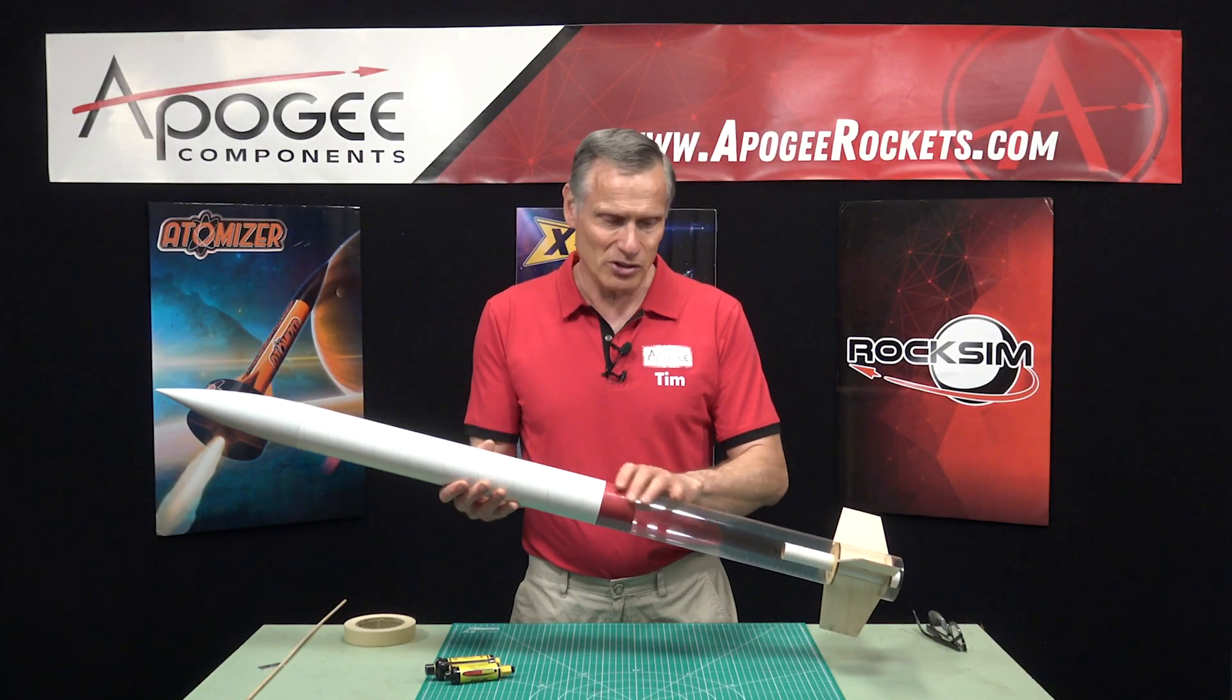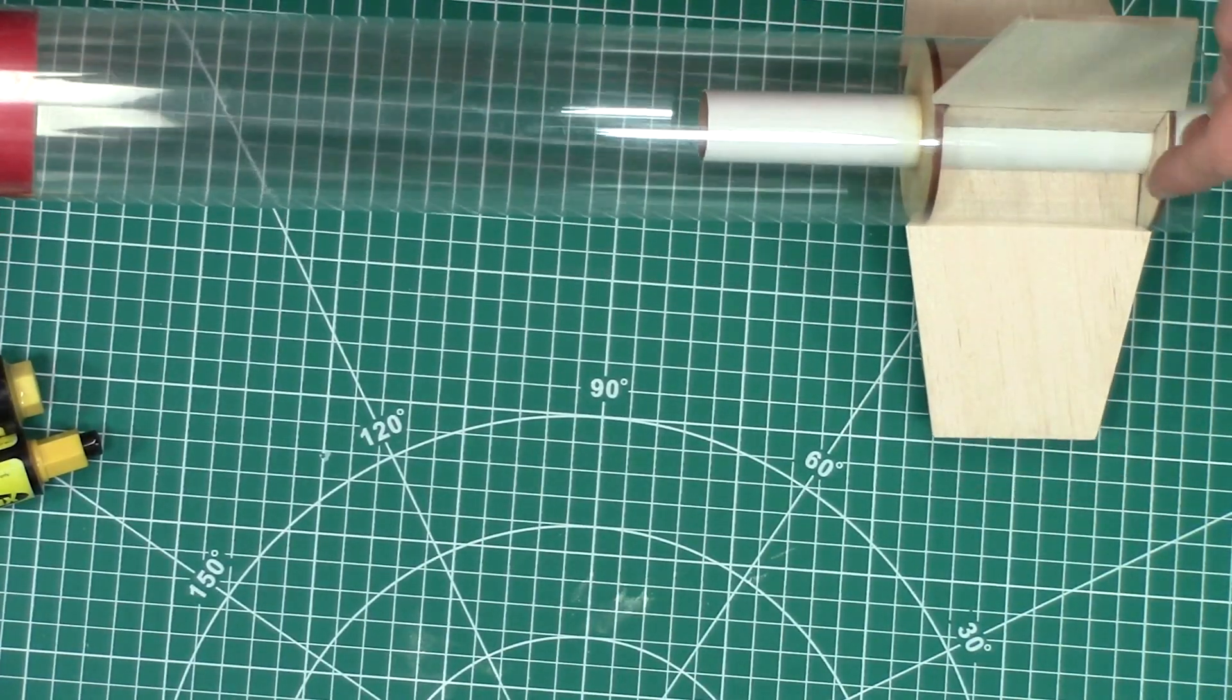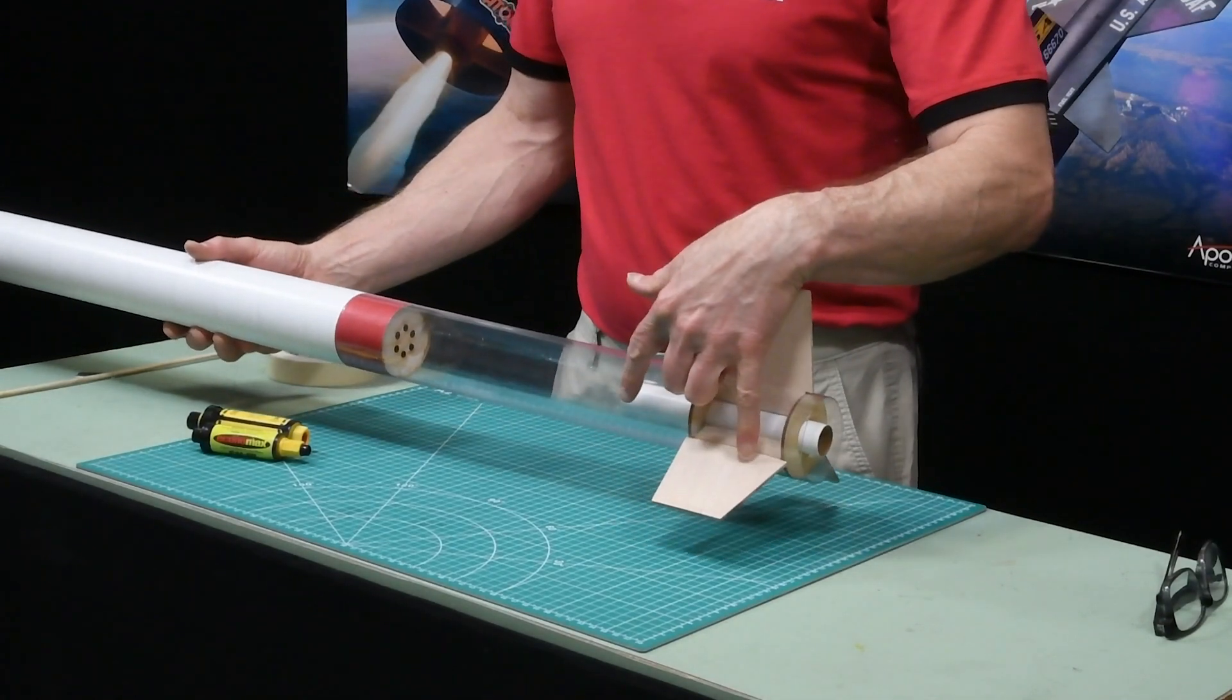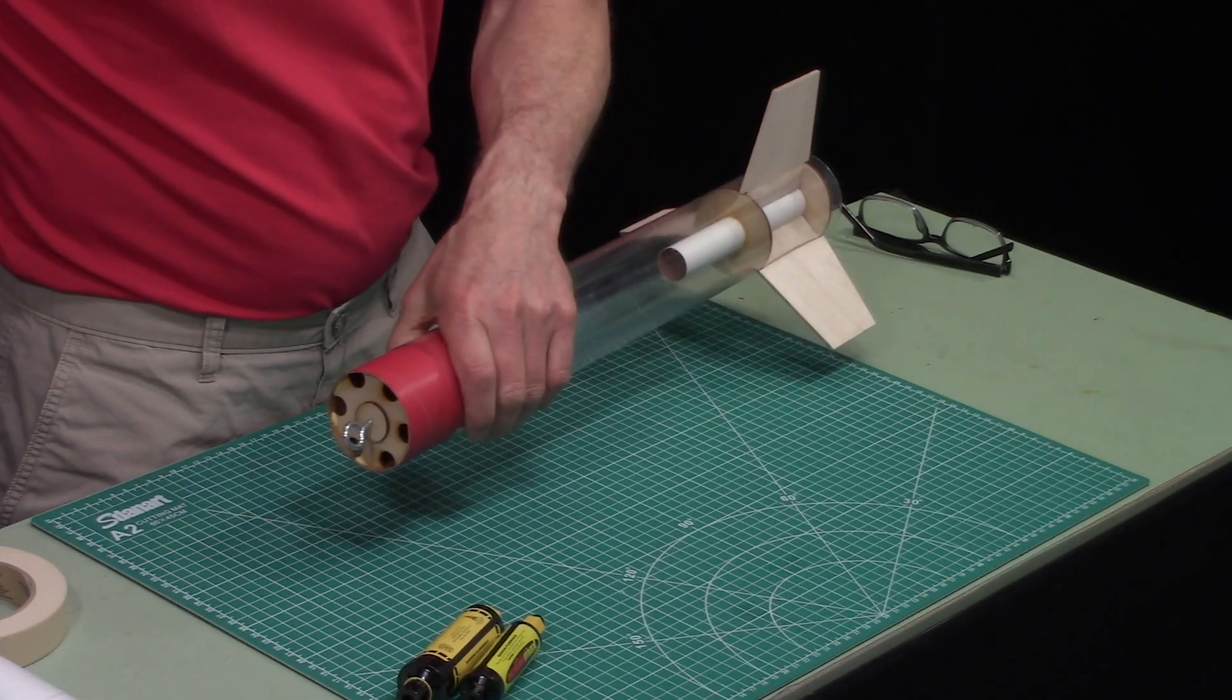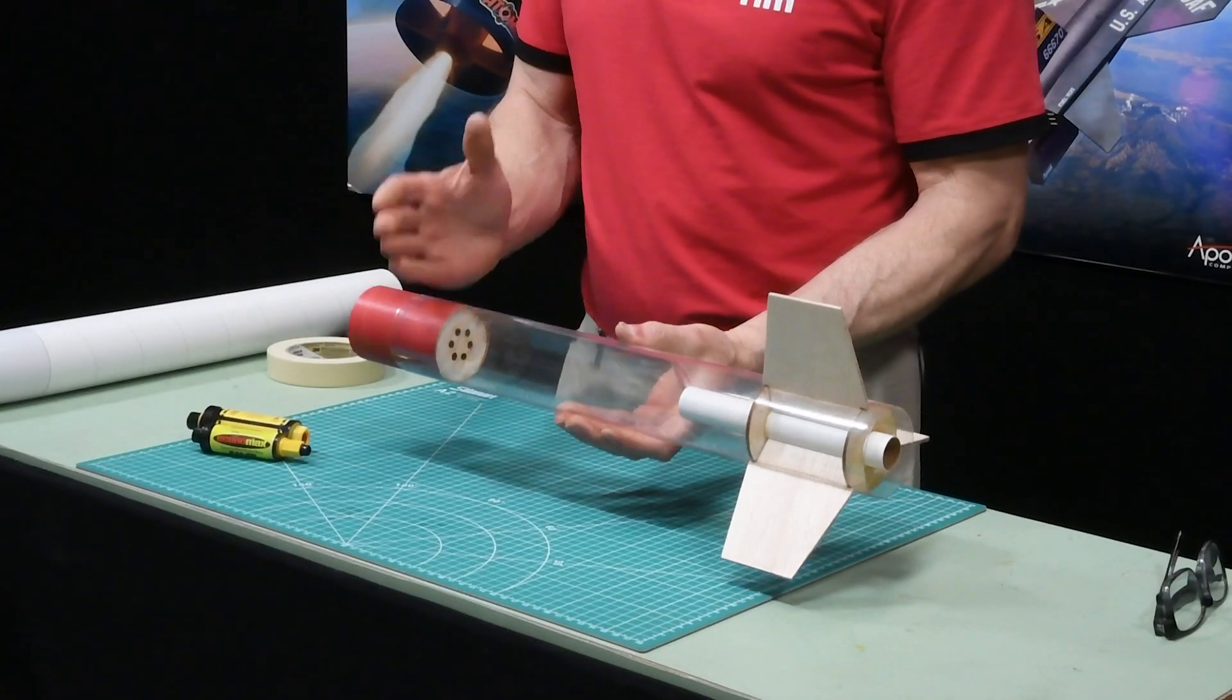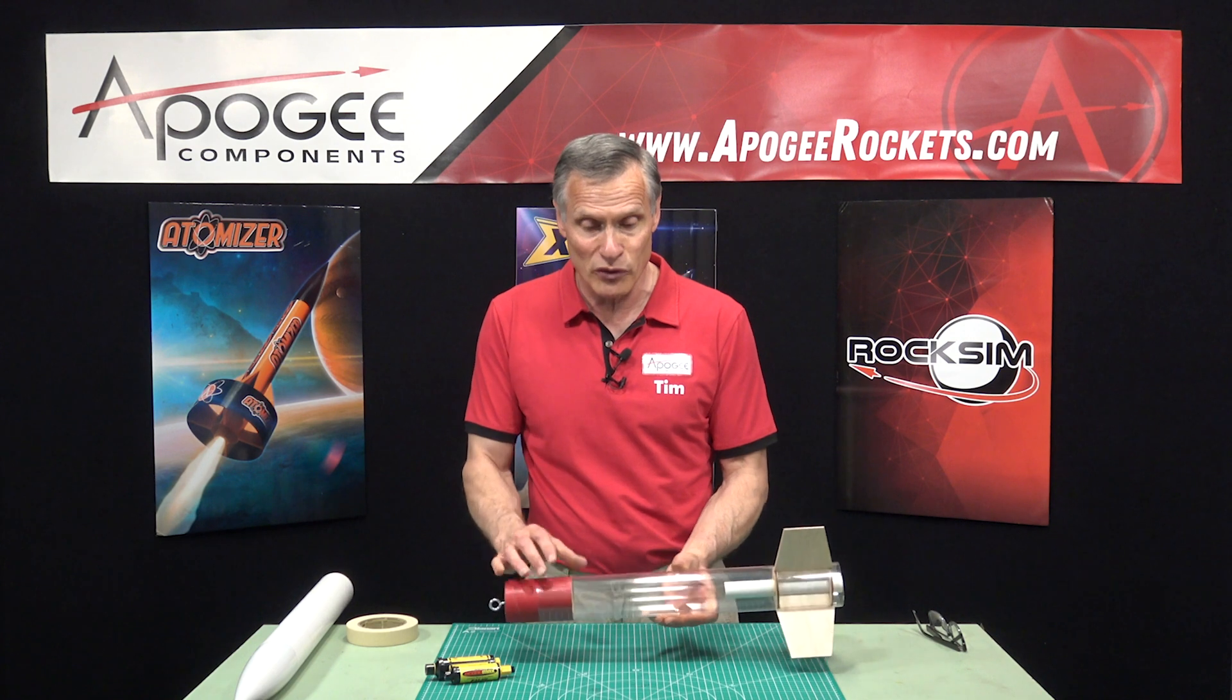On this particular rocket, as you can see, I've made a clear section so you can see what's going on inside. I got my engine mount back here, the motor tube, and then up here in the front I have an ejection baffle and usually this baffle is glued into place because you don't want it moving on you.